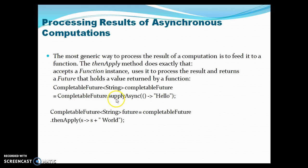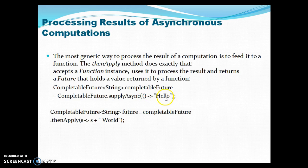Here in the code snippet on this slide, I have used supplyAsync, which we have already seen — it exists in CompletableFuture and is a static method you can call directly by class name. supplyAsync takes a Supplier as an argument, so we have defined a lambda expression as the Supplier and we got an instance of CompletableFuture.